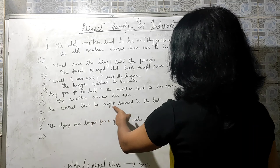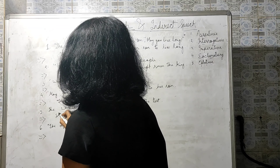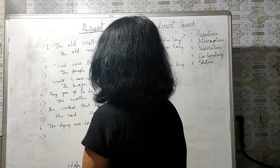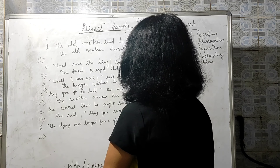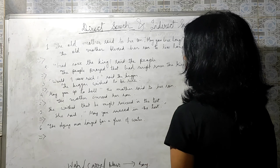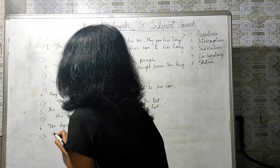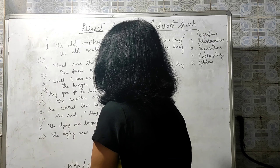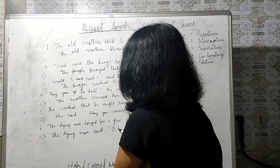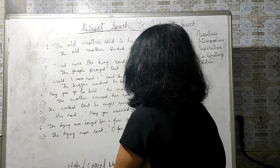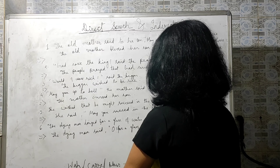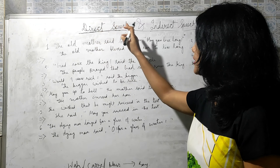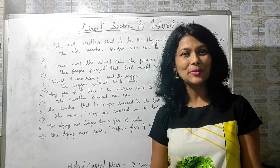Final examples: 'She wished that he might succeed in the test' — converting to direct speech: 'She said, may you succeed in the test.' 'The dying man longed for a glass of water' — direct speech: 'The dying man said, oh for a glass of water.' This completes narration — transformation from direct to indirect and indirect to direct for all sentence types.